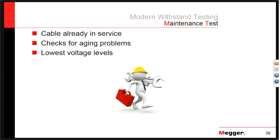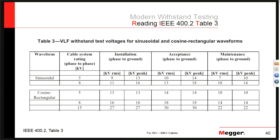Looking at a segment of IEEE 400.2 Table 3, it's very easy to read. Select the waveform you'll be using — dictated by your equipment — then select the voltage rating of your system. For example, a sinusoidal 5 kV cable: decide if you're doing the installation test, acceptance test (splices and terminations done but not yet in service), or maintenance test (cable already in service for a number of years). Maintenance test values are generally about 70–80% of acceptance test values. IEEE has this chart for everything from 5 kV to 69 kV.